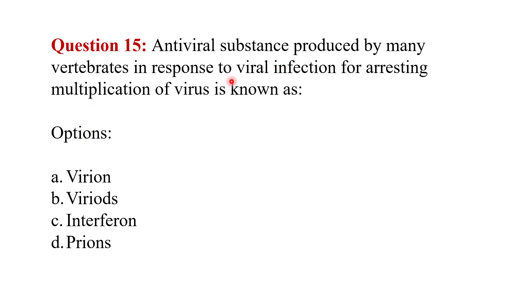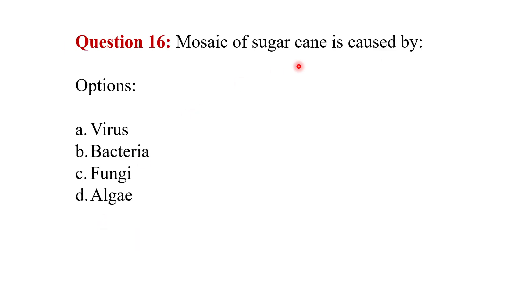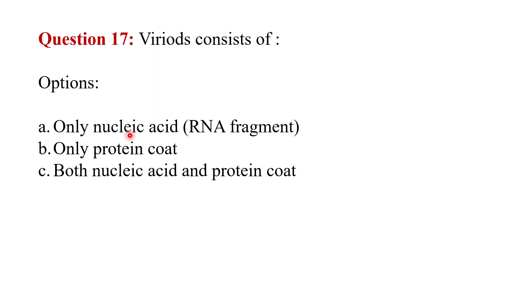Antiviral substance produced by many vertebrates in response to viral infection for arresting multiplication of virus is known as what? The answer is interferon. Mosaic of sugarcane is caused by what? The answer is virus. Viroids consist of what: only nucleic acid, the RNA fragment, only protein coat, or both nucleic acid and protein coat? Viroids consist of only nucleic acid, the RNA fragment.